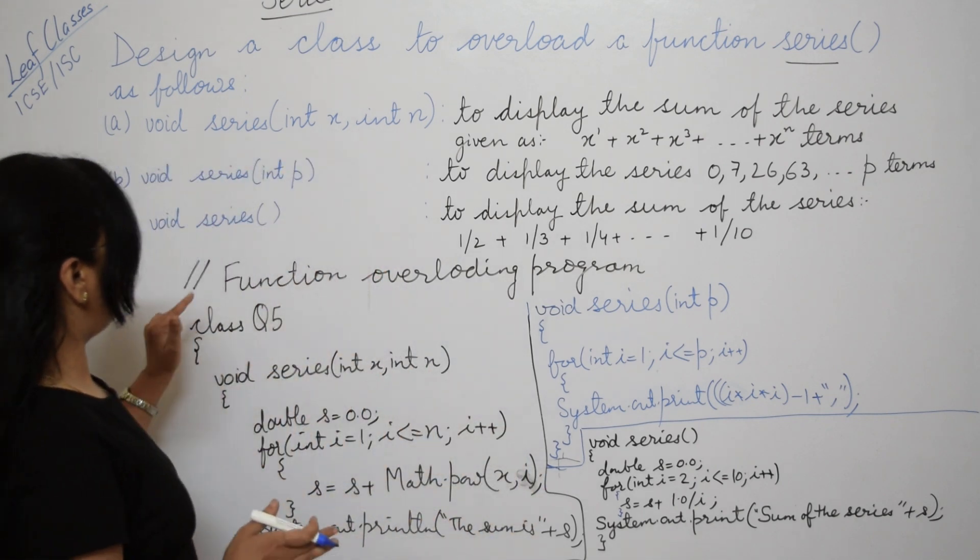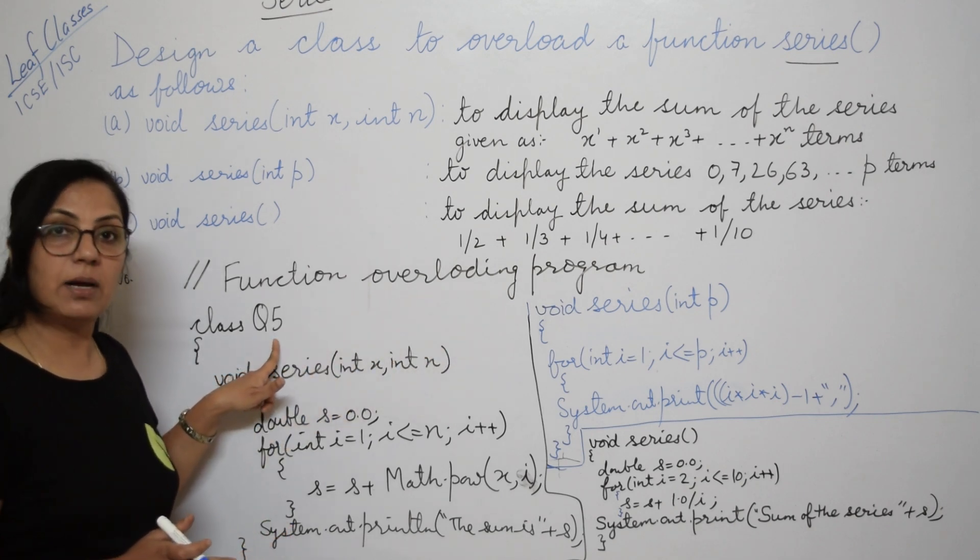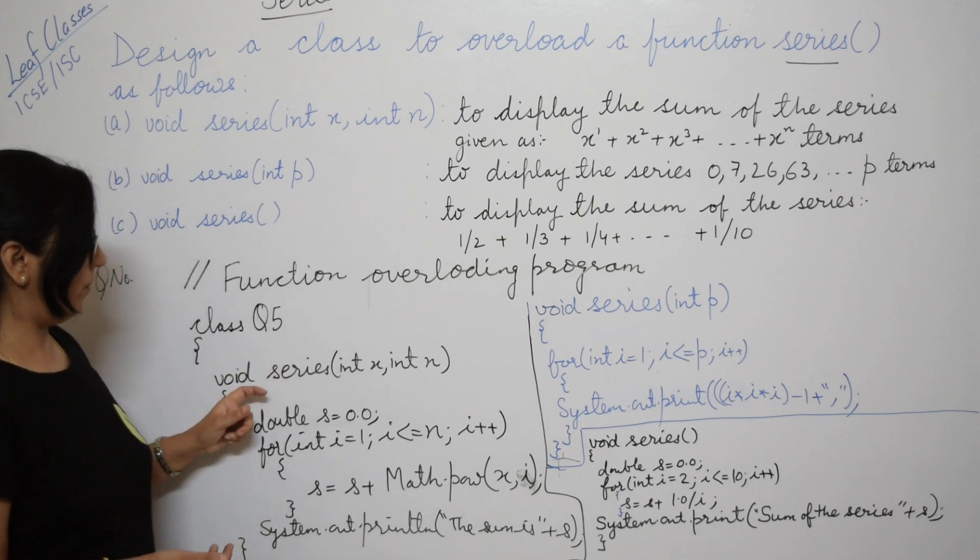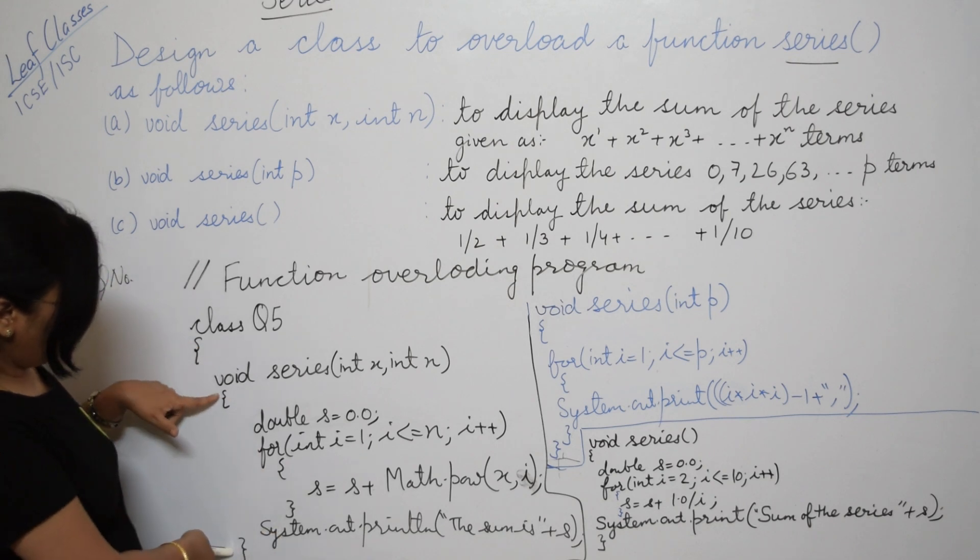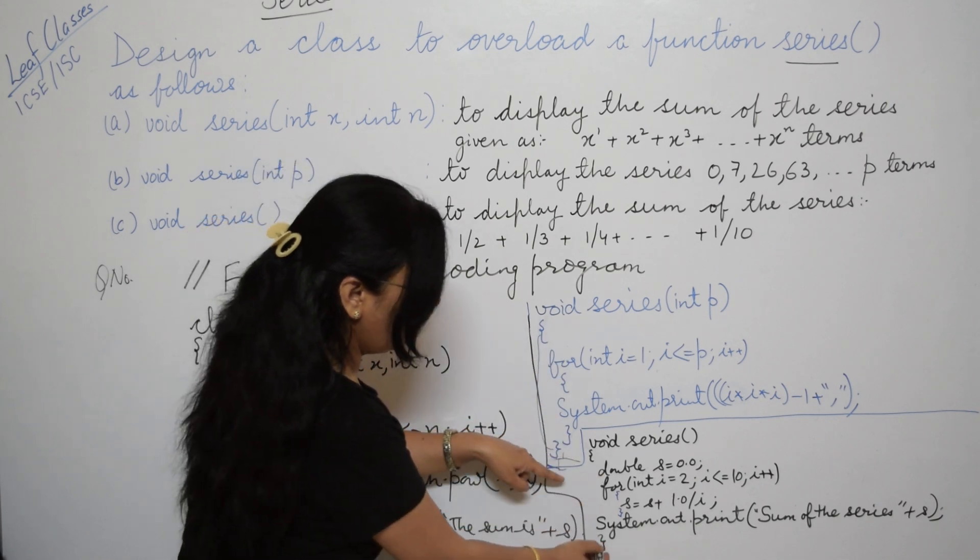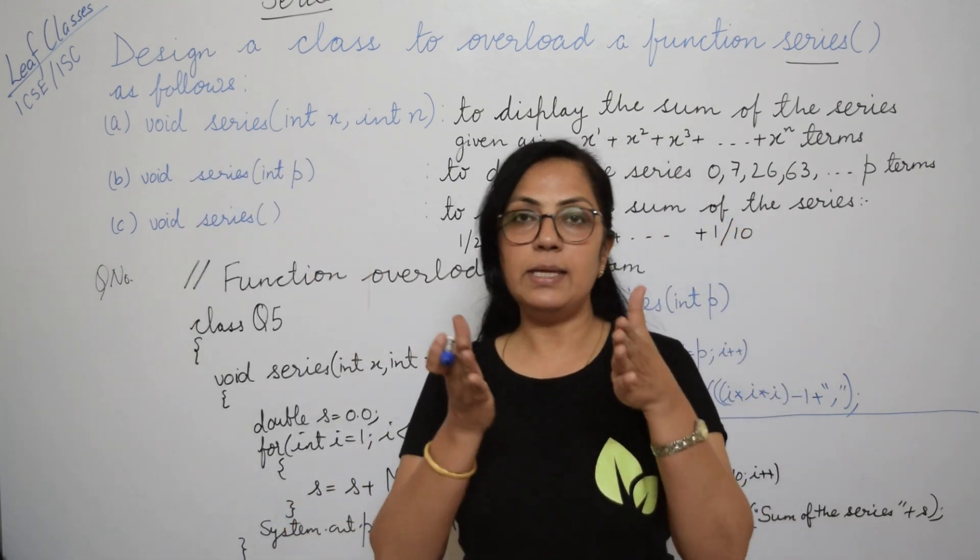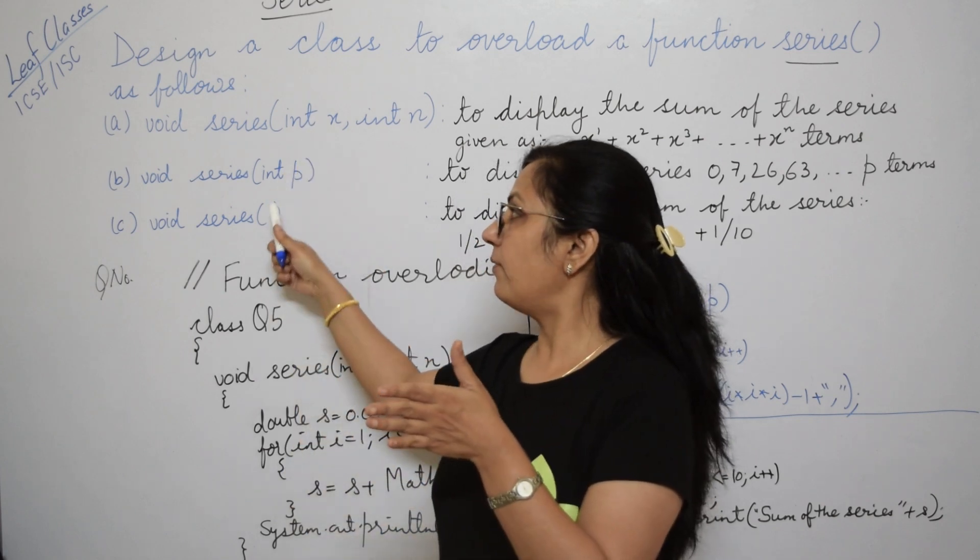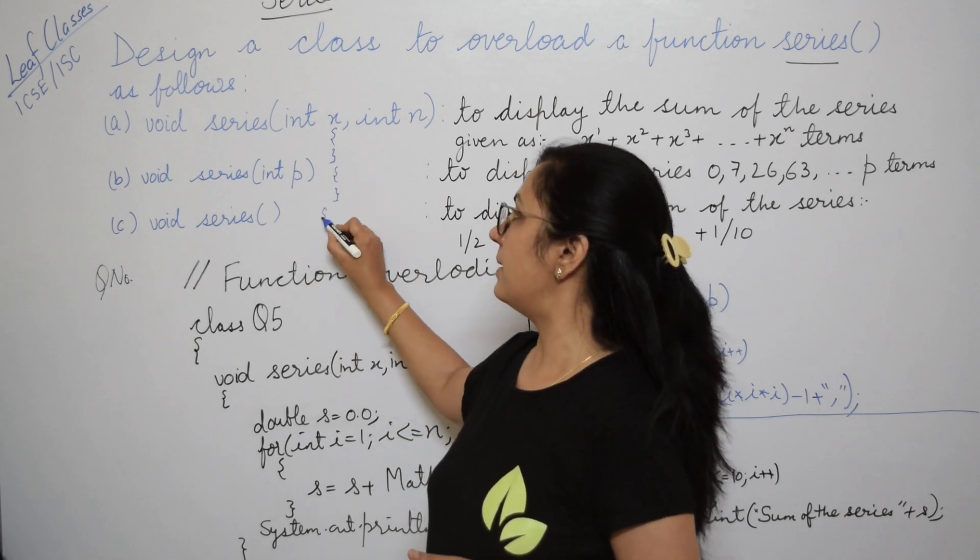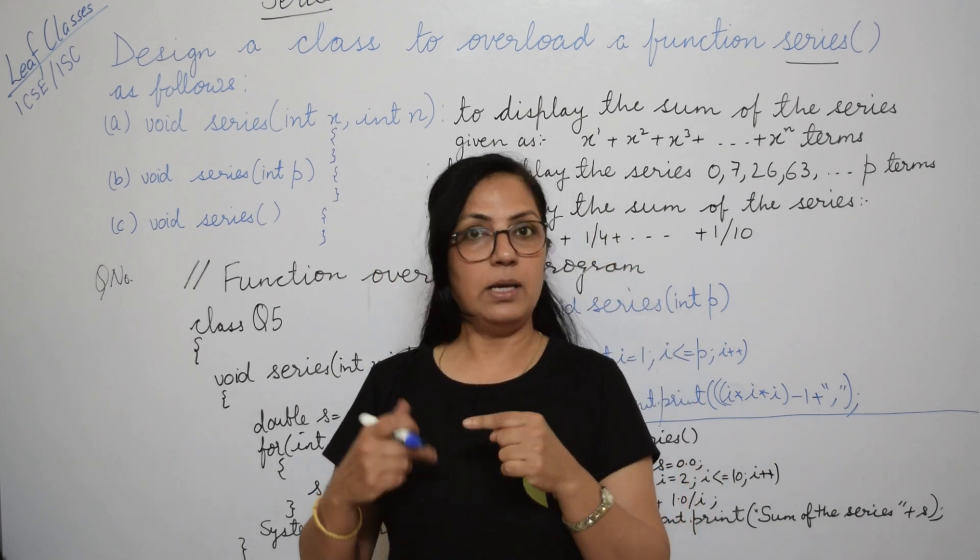Now how will you do the program? Once again revising: double slash and write the comment entry, then class - class name if given in question, otherwise as per your observation you can write any valid, appropriate class name. First function series written, braces closed. Second function written, braces closed - this is ending here. Third written, braces closed. After that, close the class. Don't miss closing the braces for the class. Within the class we have written three functions, each within a pair of curly braces.